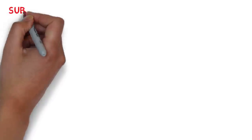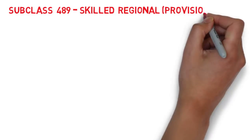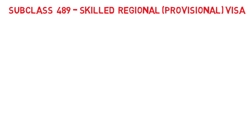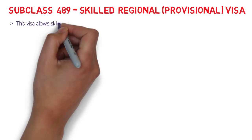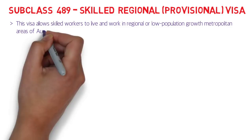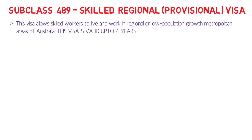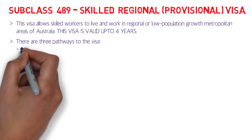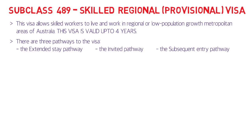Now let's talk about the last one, visa subclass 489, also called the Skilled Regional Provisional Visa. This visa allows skilled workers to live and work in regional or low population growth metropolitan areas of Australia. Importantly, this is a provisional visa — unlike 189 and 190, it does not entitle you to live in Australia permanently. It is only valid for up to four years.